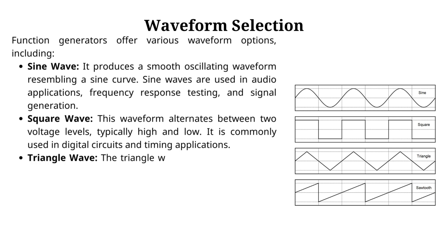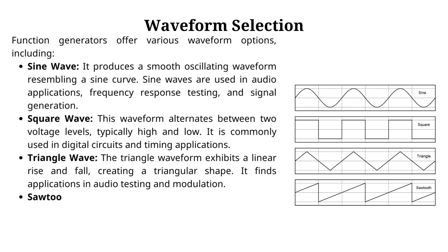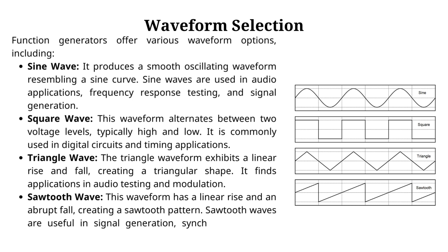Triangle wave: the triangle waveform exhibits a linear rise and fall, creating a triangular shape. It finds applications in audio testing and modulation. Sawtooth wave: this waveform has a linear rise and an abrupt fall, creating a sawtooth pattern. Sawtooth waves are useful in signal generation, synchronization, and timing applications.